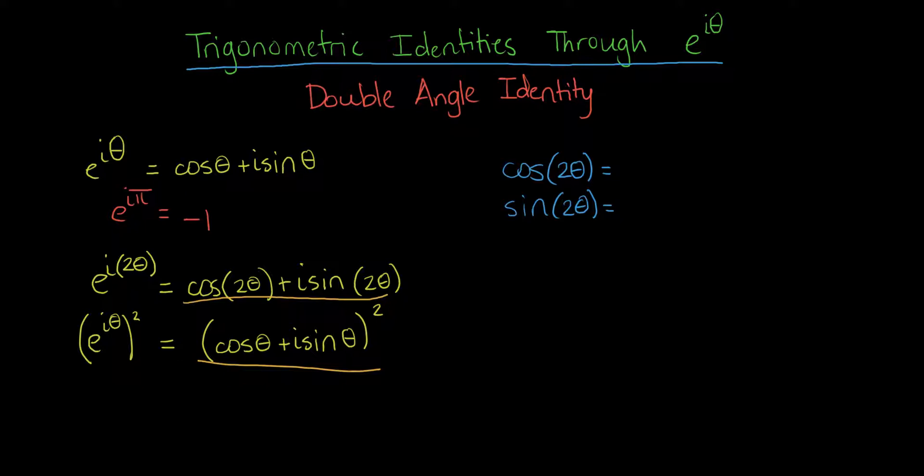So, what we can do is say, okay, well, what's this value if we expand it out? Well, the cosine squared of theta, cosine squared of theta, plus i squared is negative 1, so minus sine squared of theta, minus sine squared of theta. And then we're going to add 2 times i times the cosine of theta times the sine of theta.